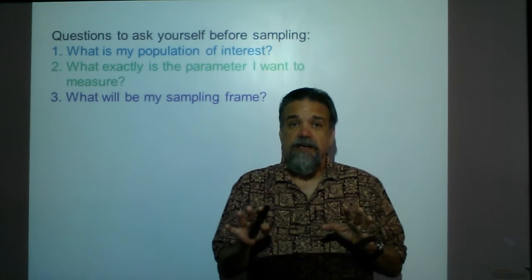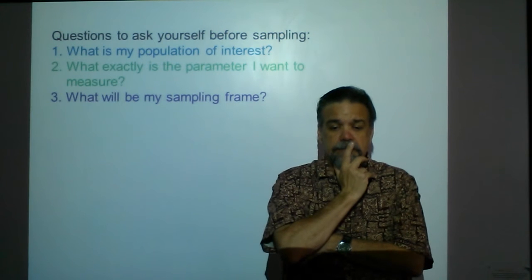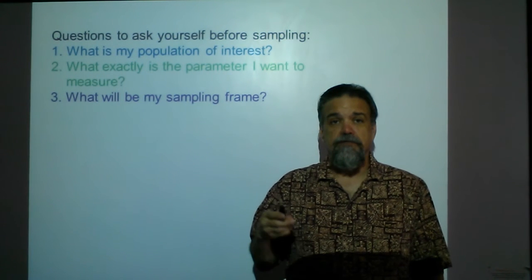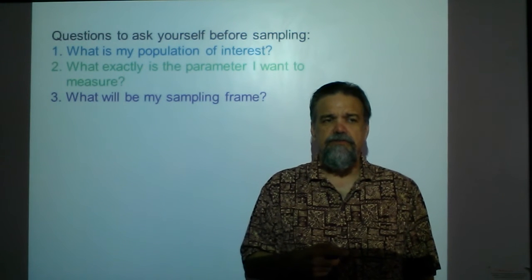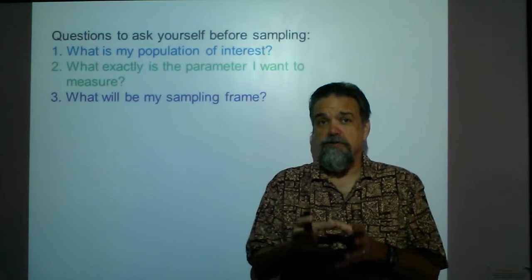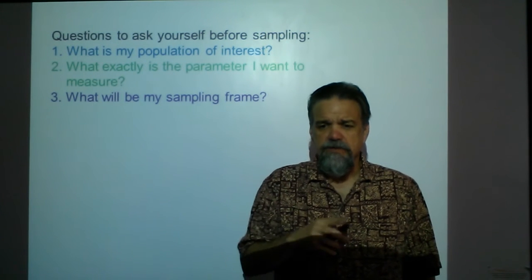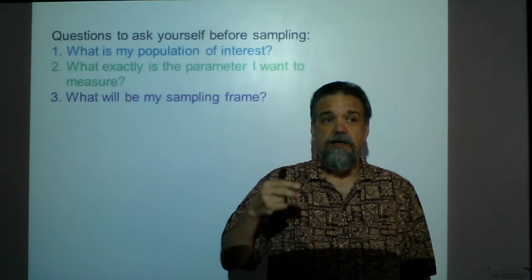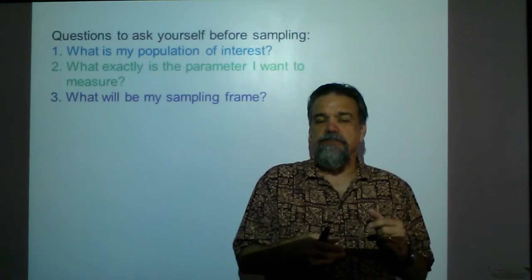Next, what will my sampling frame be? I don't want to end up like the Literary Digest. If I go out on the street, my sampling frame is just people on the street. If I have a computer call phone numbers with Texas area codes, I'm only reaching people with those codes — and people who've moved to Texas may have kept out-of-state area codes. If I use prior voter registration records, I'm excluding people who register shortly before the election. However I do it, I risk excluding someone, so I have to be very careful choosing my sampling frame.